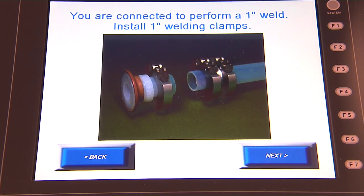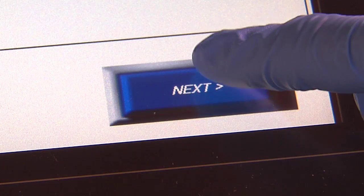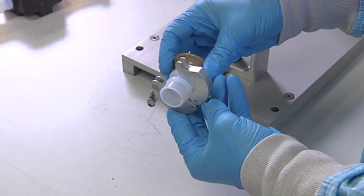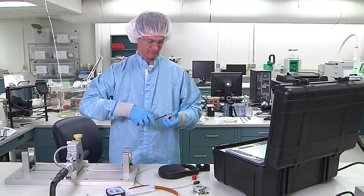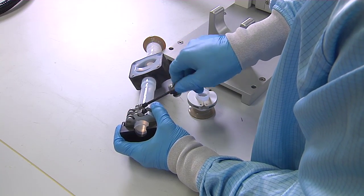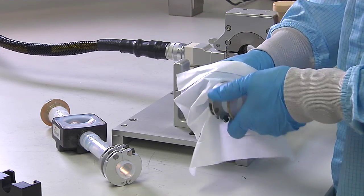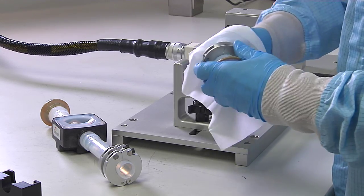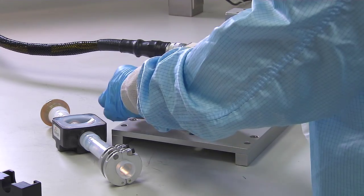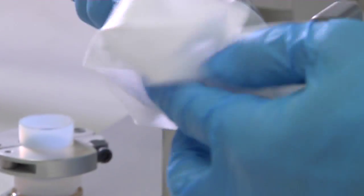Verify that the recognized weld head size matches the weld to be performed. Add the proper clamps to the components to be welded. After the clamps have been attached, use a clean, non-shedding wipe with IPA or DI water to clean the ends of the components to be welded.